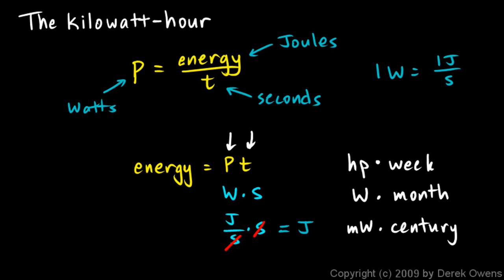Now these aren't very common. What's commonly used as a unit for energy is a watt times a second, which is the same thing as a joule. But there's one other unit for energy that's commonly used, and that's a kilowatt times an hour.